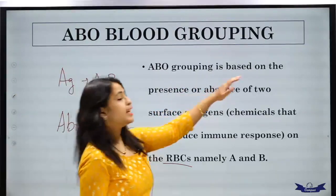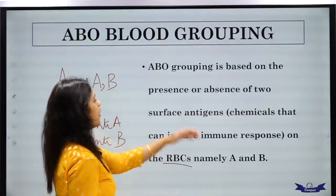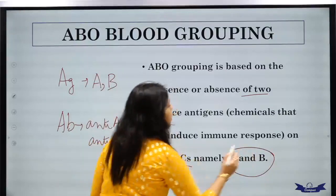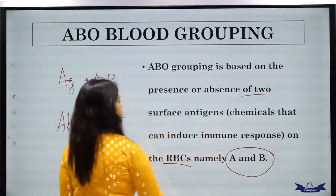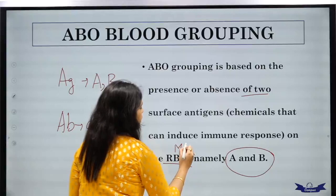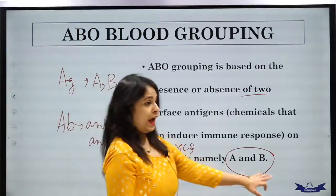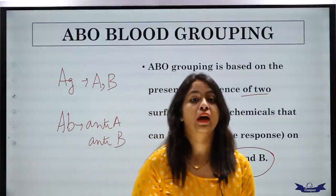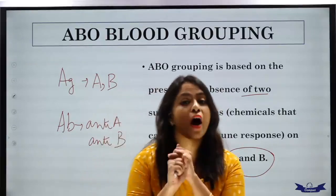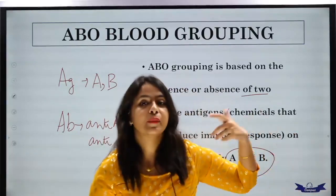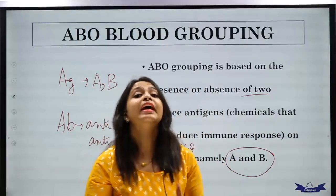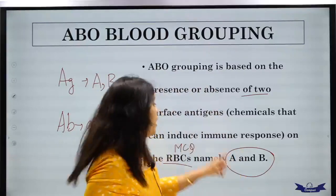ABO blood grouping is based on the presence or absence of two surface antigens — A and B. Antigens are the chemicals that can induce the immune response, and antigens are present on the RBC. This is an important MCQ point: if asked where A and B antigens are found, they are present on the surface of RBCs — not on WBCs, not on platelets.